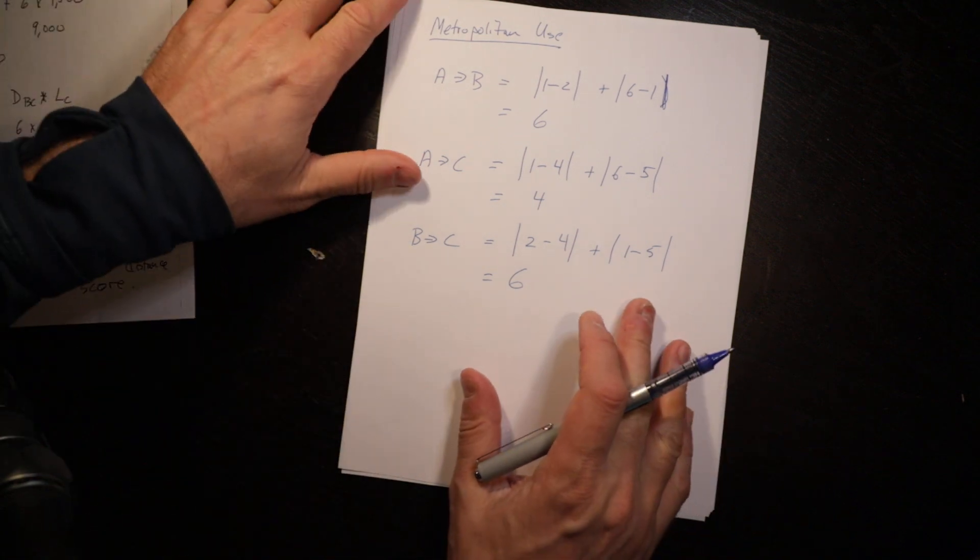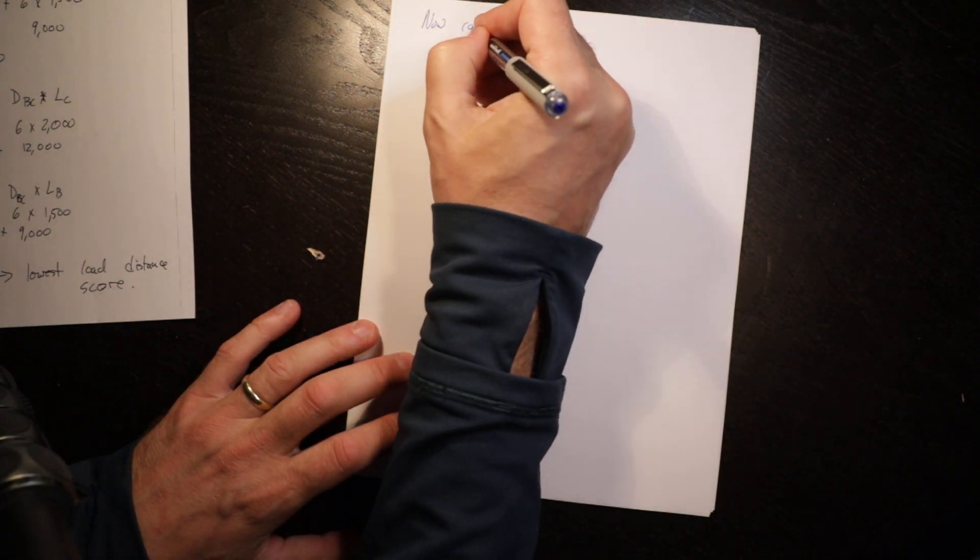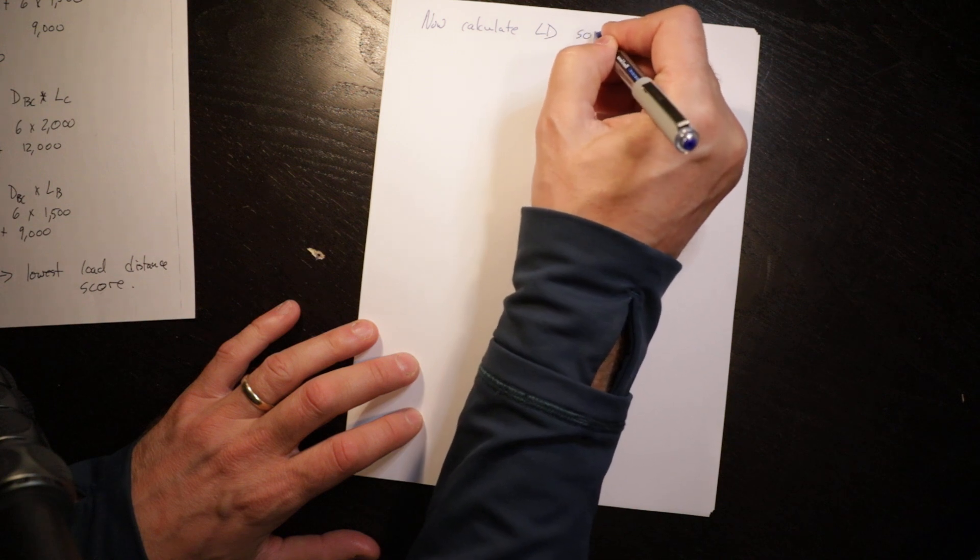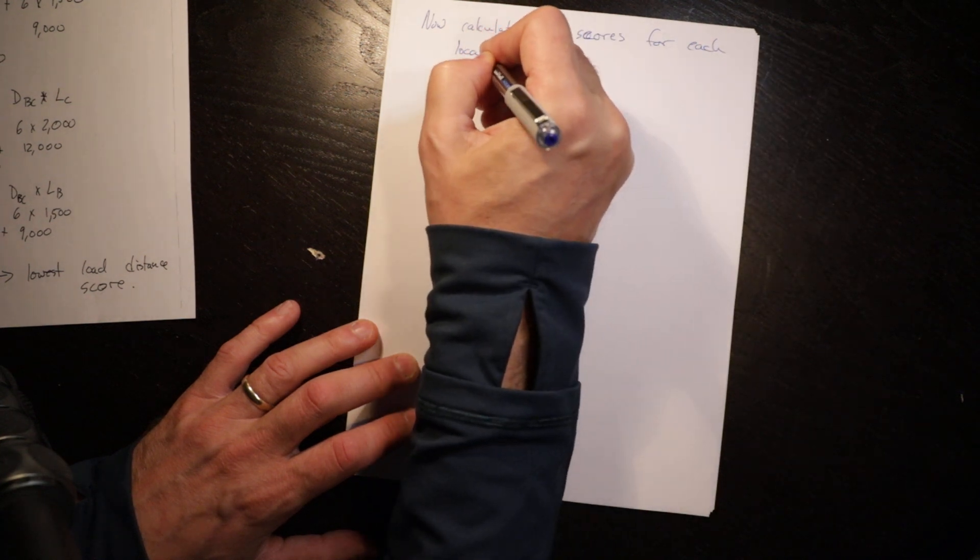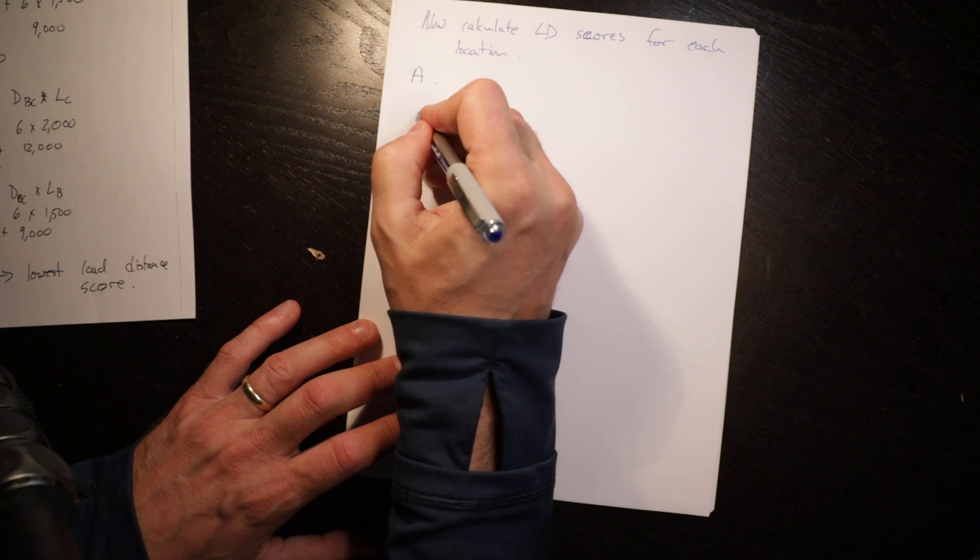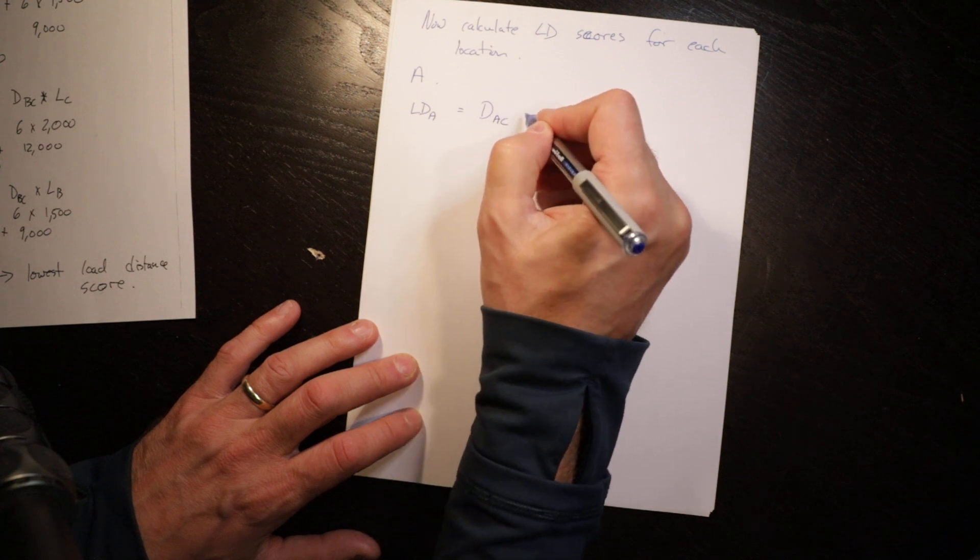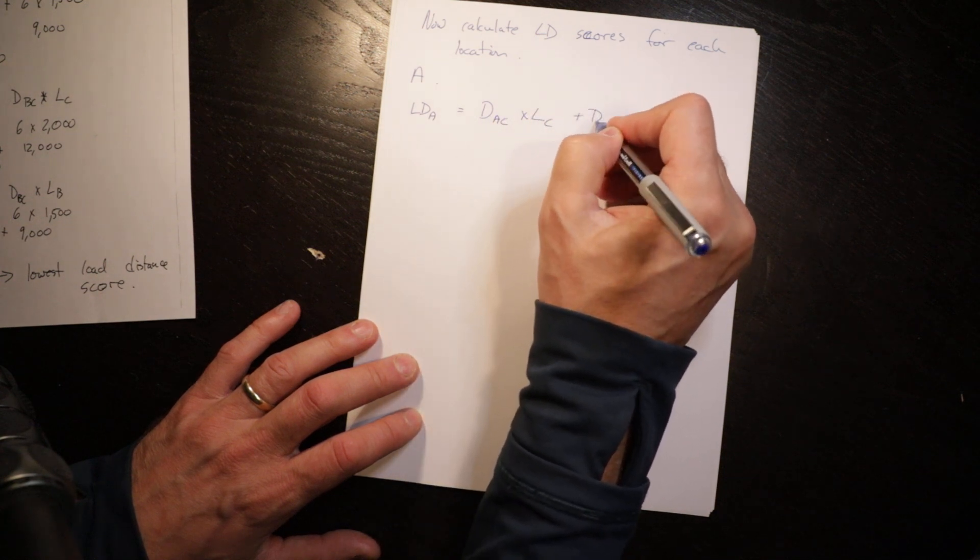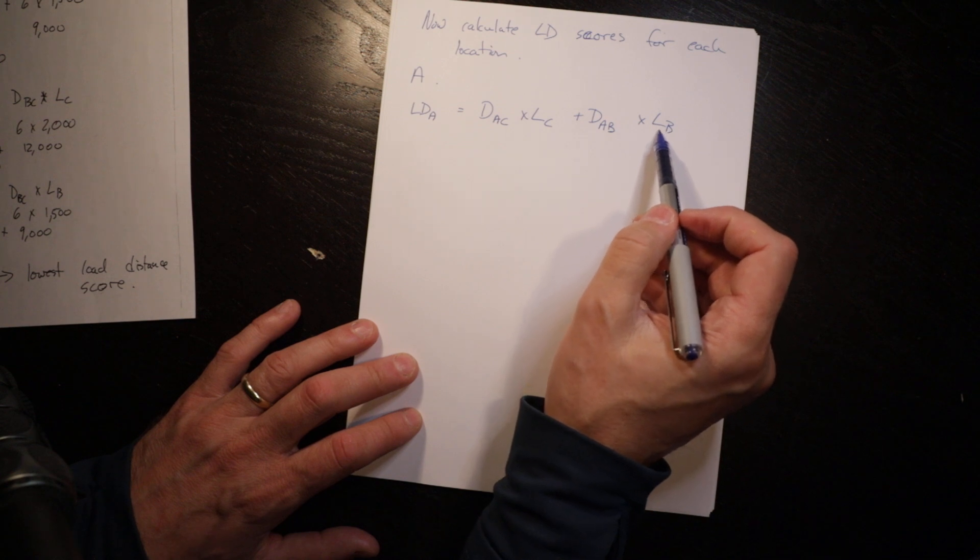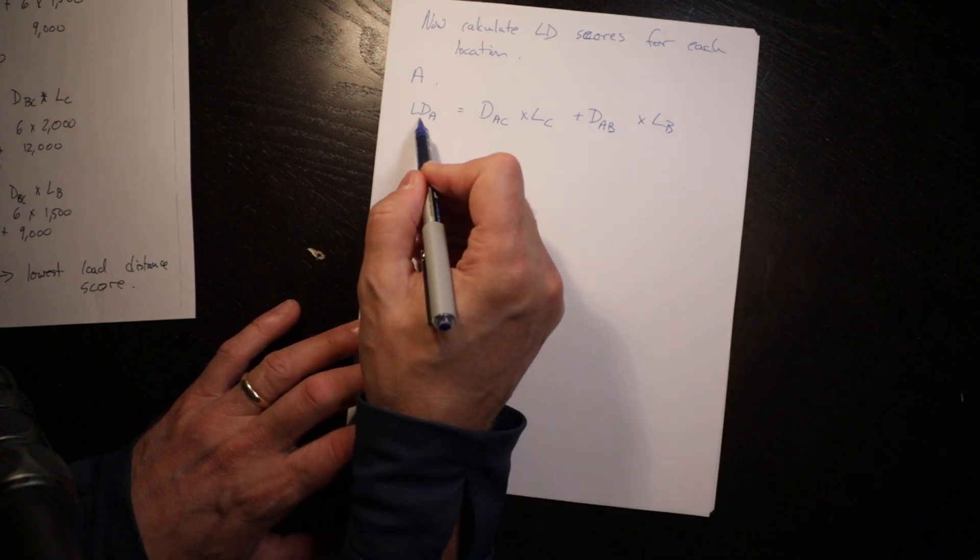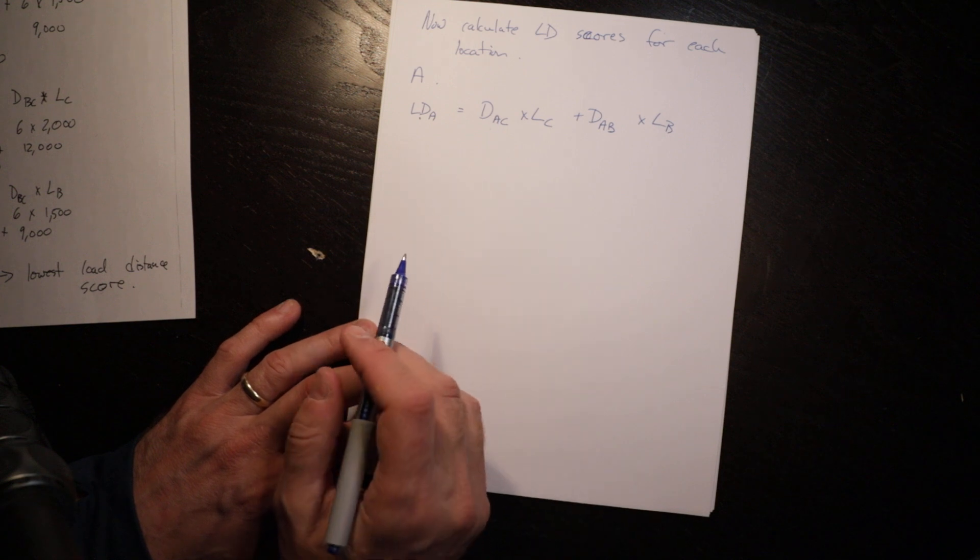Now we look at load distance scores for each location. Load distance score for A equals the distance from A to C times the load from C plus the distance from A to B times the load B. Where students often go wrong here is they'll put the load for A in here and that's not correct. The facility is in A. The demand from A will stay at A and this is the distance that the demand from the other centers has to travel.